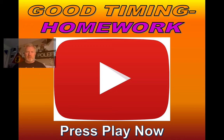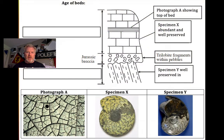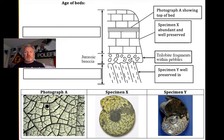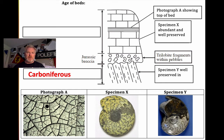OK, let's see what you've come up with. This is our sequence of rocks. The first question was for you to work out the age of these. The only real information we have is that the breccia is Jurassic, so it implies that the rocks beneath that must be older than the Jurassic, and the rocks above must be younger. We've actually got some more specific information from the fossils — specimen X and specimen Y. The rocks at the bottom here are Carboniferous in age. I know that because specimen Y is a goniatite.